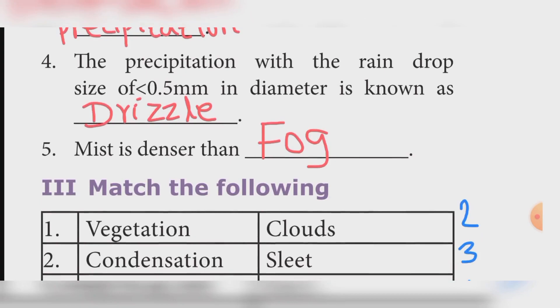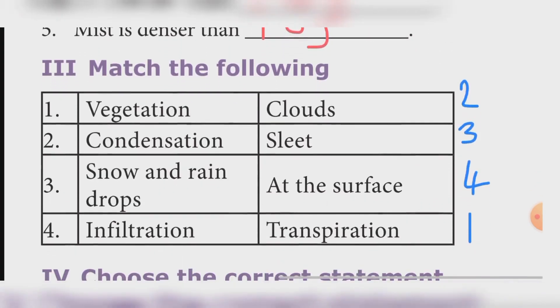Match the following. Vegetation — Transpiration. Condensation — Clouds. Snow and raindrops — Sleet. Infiltration — At the surface.